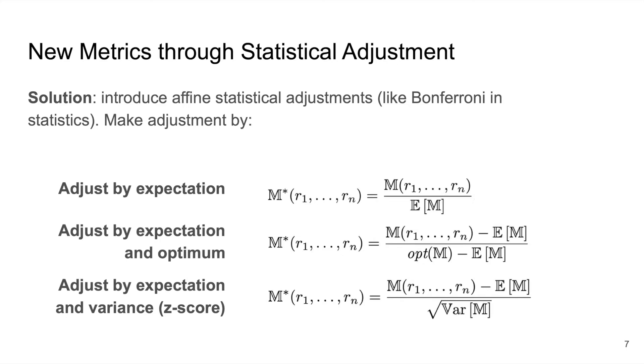Second, we propose an adjustment by both the expectation and the optimal value, which maps the best value to one, the expected value to zero, and all worse values to negative numbers bounded by a constant related to the expectation of the base metric.